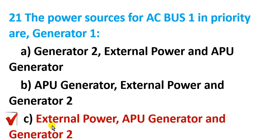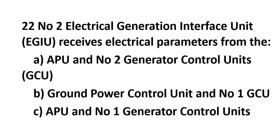That is the correct answer — put a mark on it. That completes the first question's answer. Let us go to the second question. Number two: the electrical generation interface unit. Take care — interface unit means the interface between something and another thing. It receives electrical parameters from...